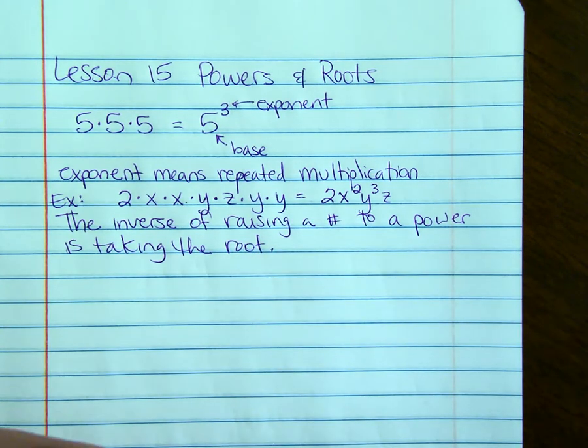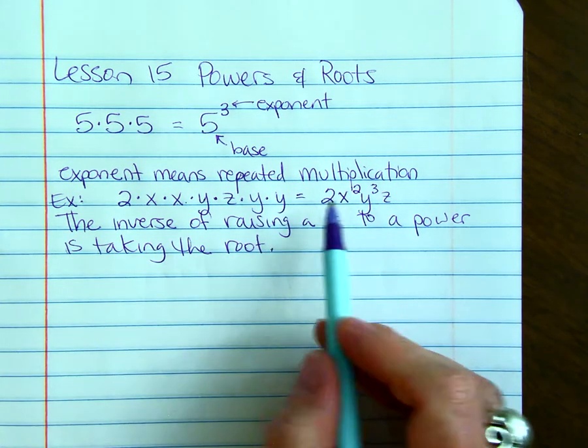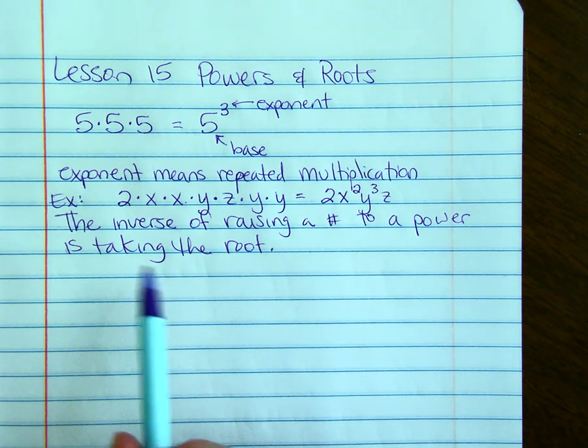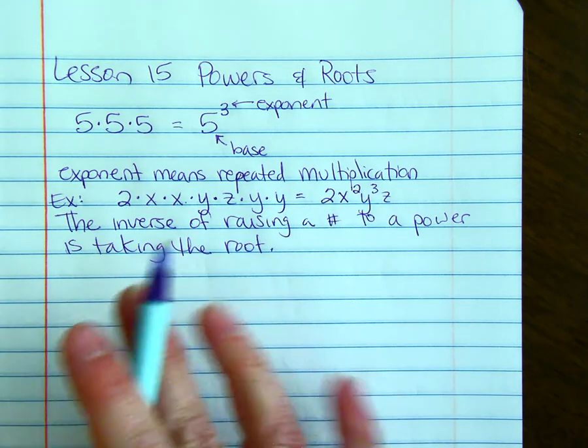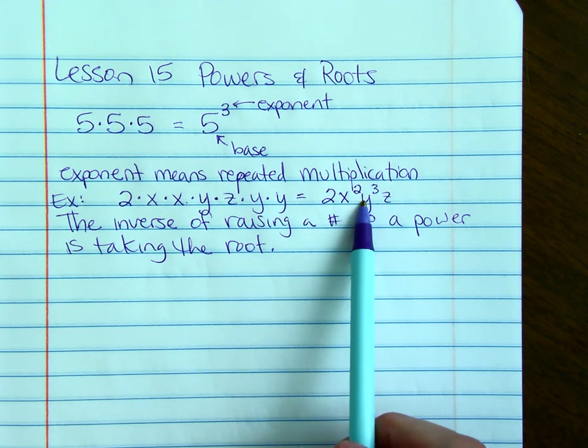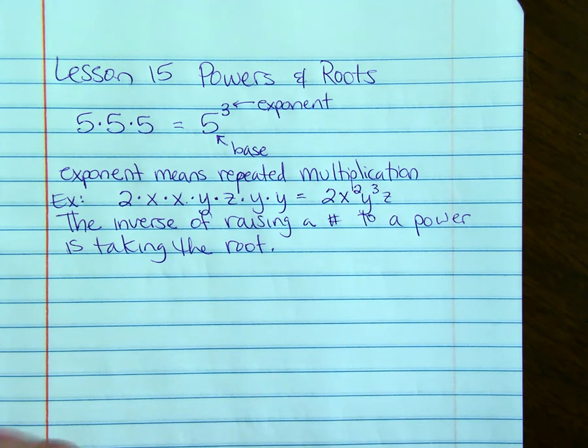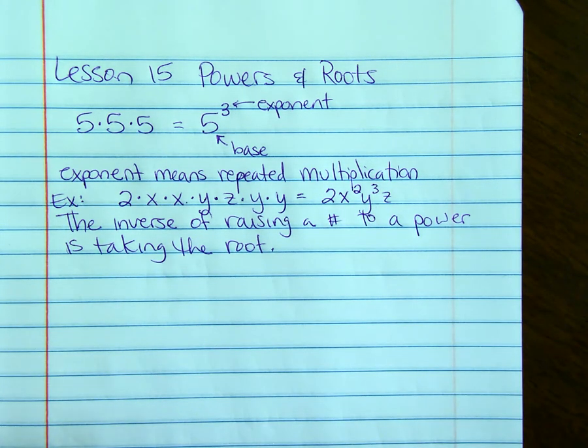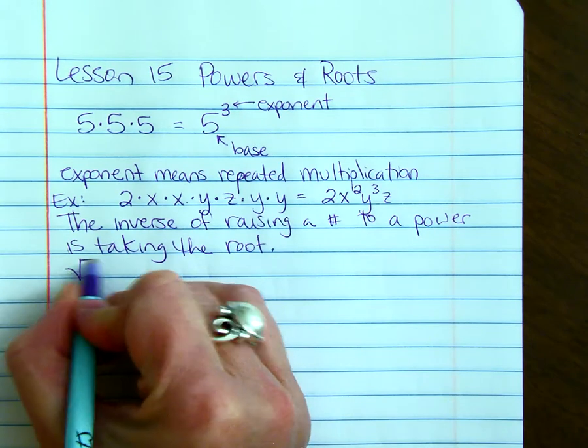If you're squaring a number like x², the inverse is taking the square root. If you raise it to the third power, the inverse is taking the cube root. The index on the root is the same number as the exponent. The square root sign looks like this.